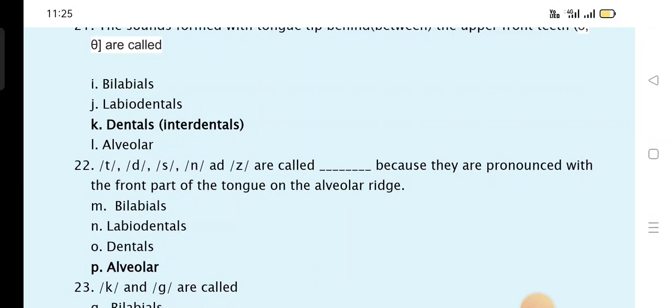T, D, S, Z, N and R are called alveolar because they are pronounced with the front part of the tongue on the alveolar ridge.